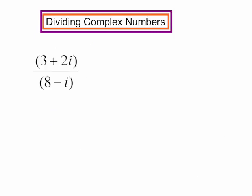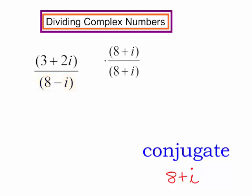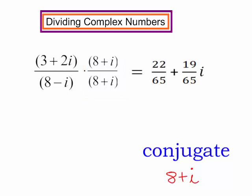So, in this problem, my first step was to find the conjugate of the denominator. The conjugate was 8 plus i. I then multiplied the numerator and the denominator by the conjugate. And then I got my answer, 22 65ths plus 19 65ths, i.